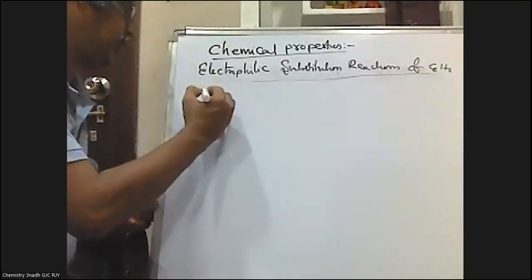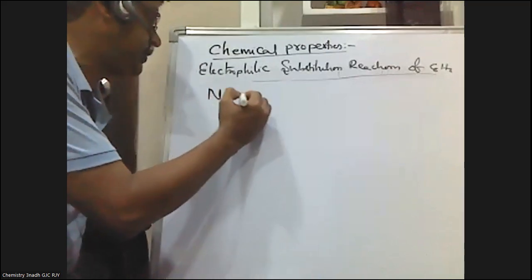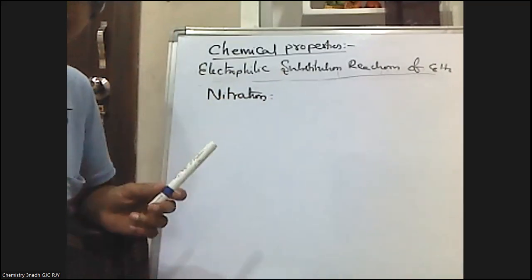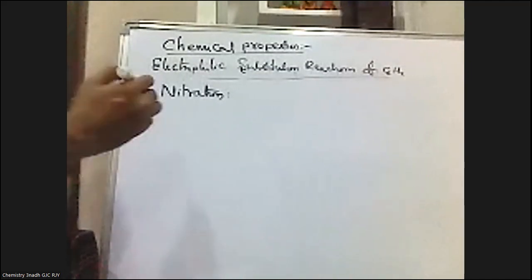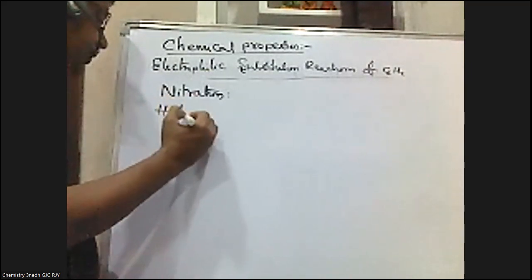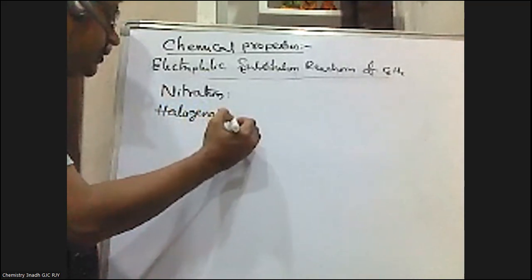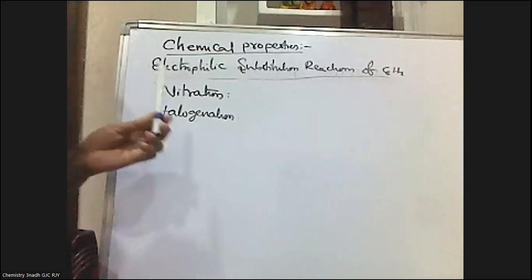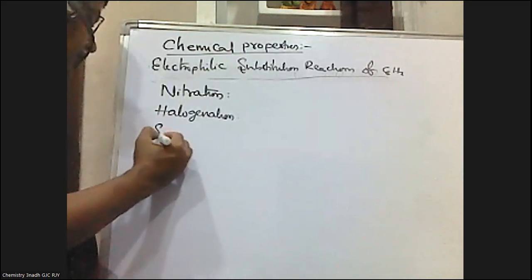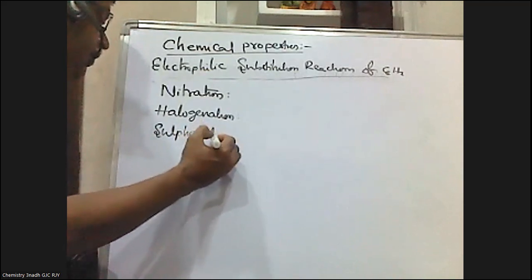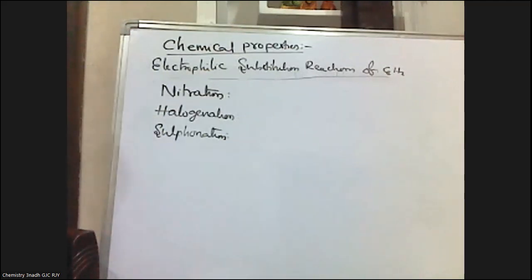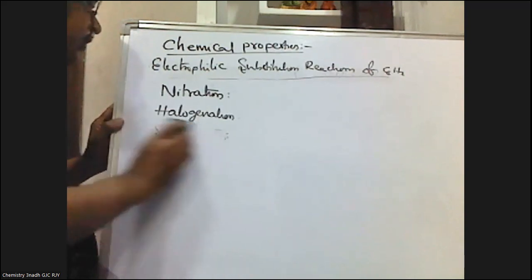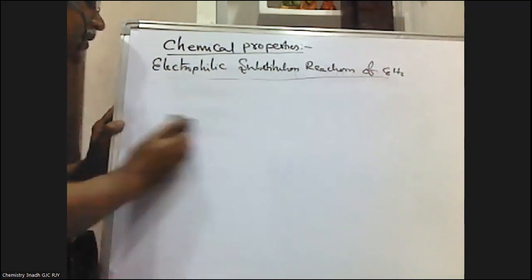In my previous videos, I discussed nitration of benzene — when benzene is treated with the nitration mixture, that is a mixture of concentrated HNO3 and H2SO4, nitrobenzene is formed. Then halogenation: when benzene is treated with halogens in the presence of Lewis acids such as ferric chloride or anhydrous aluminum chloride, halogenated benzenes are formed. Then sulfonation: when benzene is treated with fuming sulfuric acid, benzene sulfonic acid is formed. These are the three electrophilic substitution reactions discussed in the previous video.